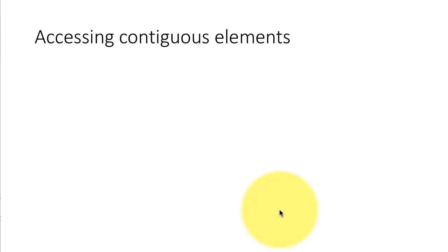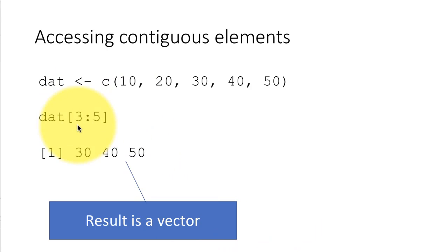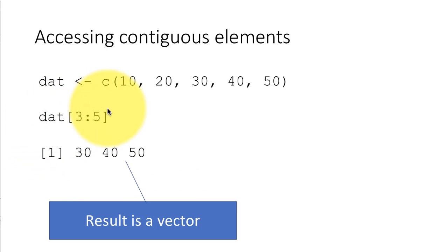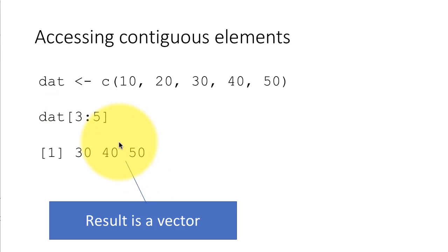The result of dat[3:5] is a vector because it returns three elements. Note that the result is being printed on the console because we didn't assign the result to anything. If I had assigned it to a variable, R would not have displayed the result — as you know, when you assign something to a variable, R doesn't display it. When you just compute something and don't assign it, R displays the result on the console.